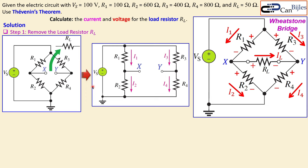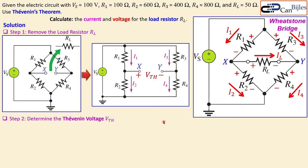We would like to calculate the current and voltage for the load resistor. What Thevenin's theorem says is you need the Thevenin voltage and also the Thevenin resistance. Step two is to determine the Thevenin voltage, denoted VTH, which is the voltage between nodes X and Y. To calculate VTH, I calculate VX — the voltage at node X — and VY — the voltage at node Y — and then subtract them: VX minus VY gives you the Thevenin voltage.